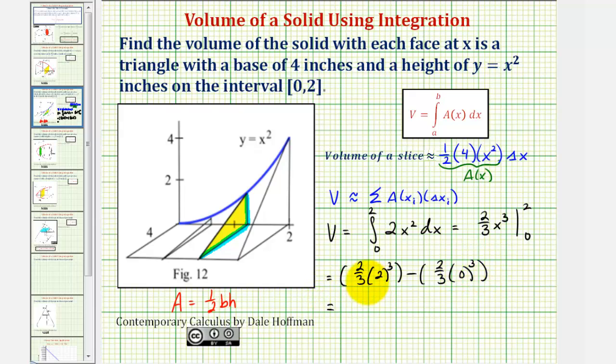So this would give us two-thirds times eight, or eight over one, minus two-thirds times zero. So this would be sixteen-thirds, which is the volume of our solid on the closed interval from zero to two, but the units are inches, so let's write this as sixteen-thirds cubic inches.